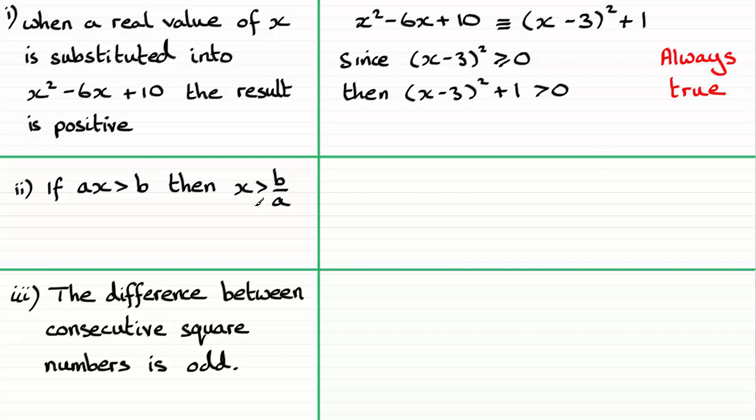Now in this next statement, if ax is greater than b then x is greater than b over a. Well it all depends really on the value of a. If it's a positive value, then when you do divide by a to both sides, x would be greater than b over a.